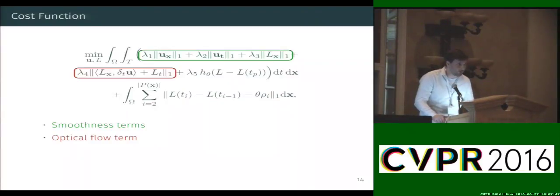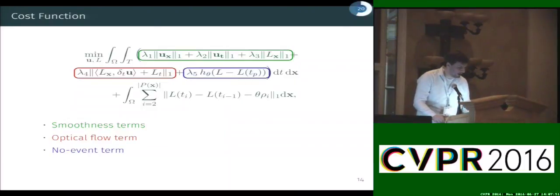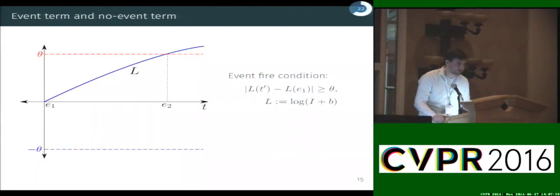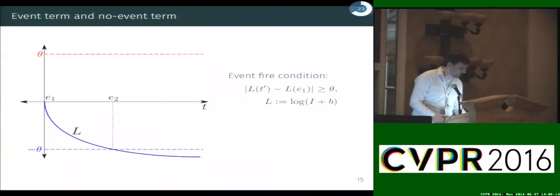And we also employ the optical flow term to enforce photometric consistency over time in our solution. However, the next two terms require a more detailed description, which are the no-event term and the event term which integrate the event data into our solution. So the event term describes when an event is fired. So a new event E2 is fired when the intensities L exceed a certain threshold theta, and theta is always set relative to the last fired event E1. So when theta is exceeded a positive event is fired, and when it goes below minus theta a negative event is fired, and the event term enforces that difference.